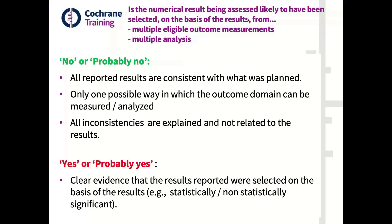On the contrary, when there is clear evidence that the results reported were selected on the basis of the results — meaning the authors seem to have chosen statistically significant or non-statistically significant results to move toward a more favorable conclusion — then you will answer yes or probably yes. It's important to understand that this depends on context. For trials comparing a new treatment to placebo, investigators are more likely to hope for statistically significant results for efficacy outcomes, but may prefer to report non-statistically significant results for safety outcomes.